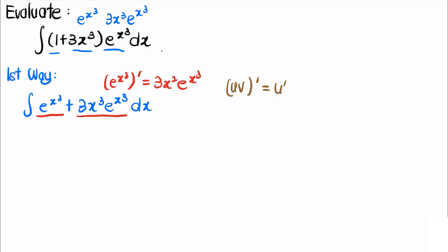The product rule has two functions u and v, and the derivative is u′v + uv′. This looks familiar because if we utilize that form to rewrite our expression, we need eˣ³ to be differentiated only once. So we let v equal eˣ³, and since the derivative of x is just 1, we let u equal x.